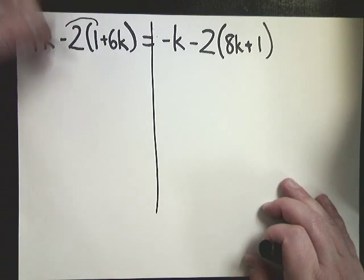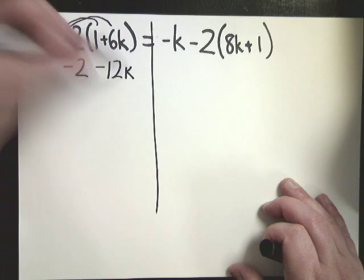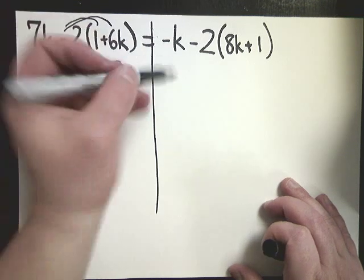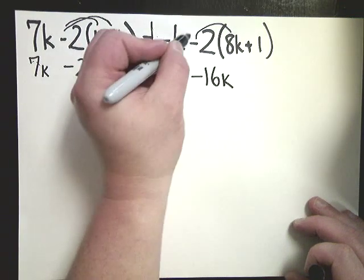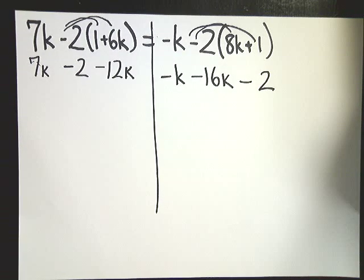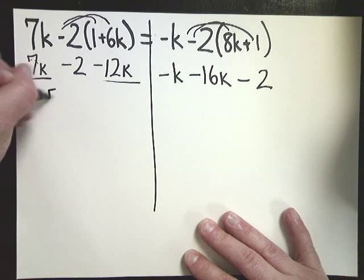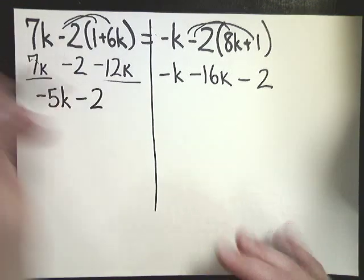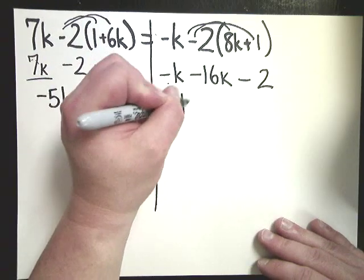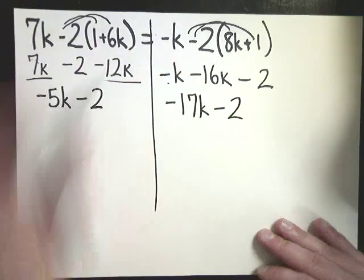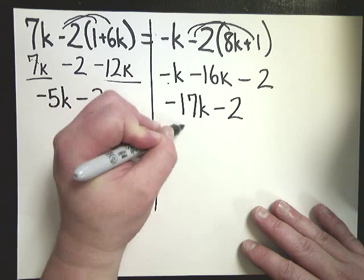So draw the line. Now we'll do distributive property. Negative two times one is negative two. Negative two times 6k is negative 12k. Bring down 7k. We don't need this. I'll bring this down. Negative two times eight is negative 16k. Negative two times one is minus two. Now I'm just going to combine like terms. On this side, it's this one and this one. So seven minus 12 is negative 5k minus 2. Negative one minus 17, or minus 16, is negative 17k minus 2.